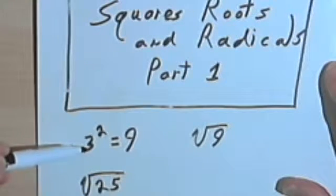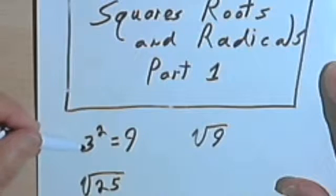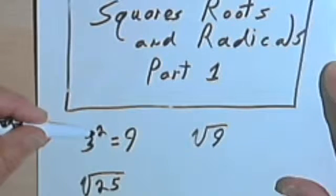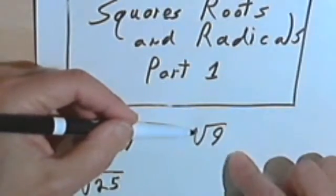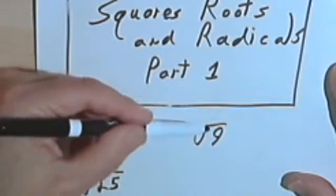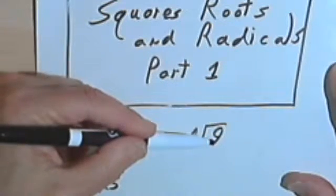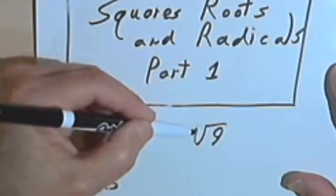Here I have the equation 3 squared equals 9. And you know that what this means is that 3 multiplied by itself equals 9. Now, I want you to compare that with this. Here I have something called a radical sign. That's this thing here. And underneath the radical sign I have a 9. And we read this expression as the square root of 9.